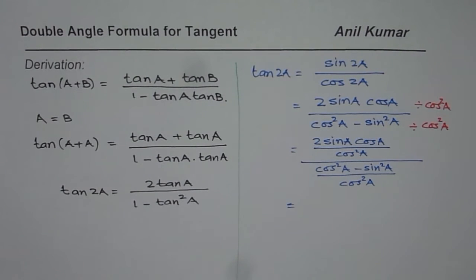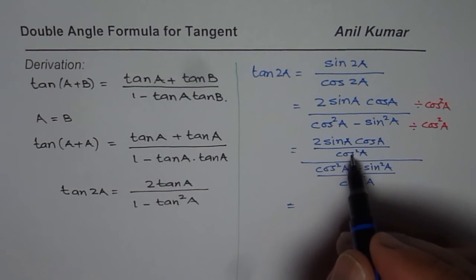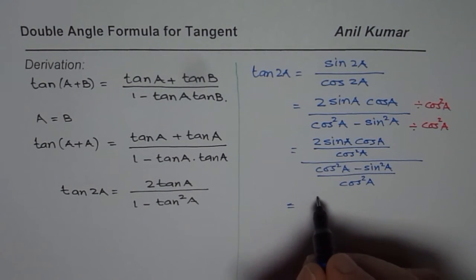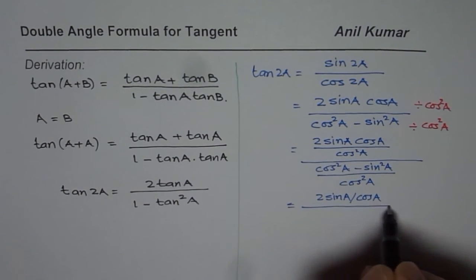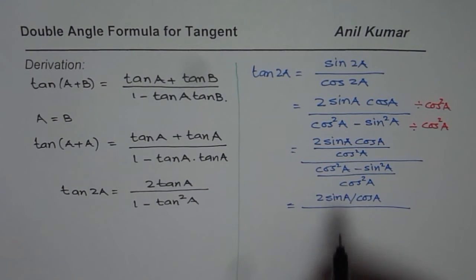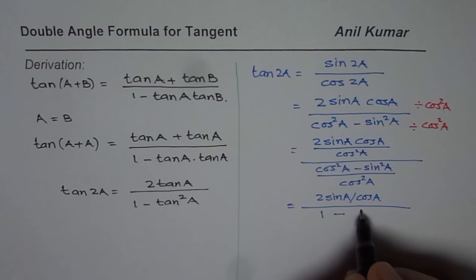When you divide, in the numerator cos(A) divided by cos²(A), one of them gets cancelled, and you are left with 2sin(A) over cos(A). In the denominator, cos²(A) divided by cos²(A) is 1 minus sin²(A) divided by cos²(A).